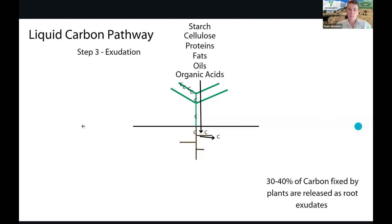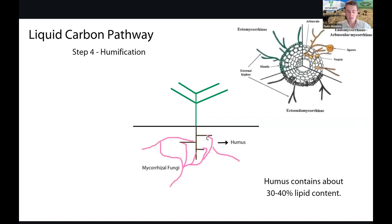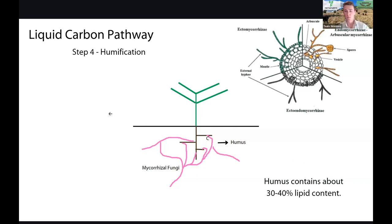Finally, we have humification. This is done by mycorrhizal fungi - a specific type that actually goes into the plant root cells, not just hanging out on the outside. The mycorrhizal fungi eat the root exudates, and the byproduct of that is humus. Humus typically contains 30 to 40% lipid content, so these mycorrhizal fungi are producing humus from the root exudates.